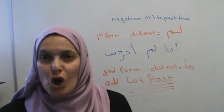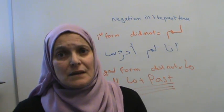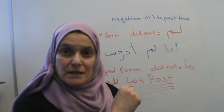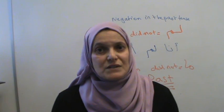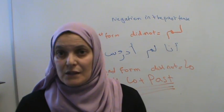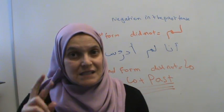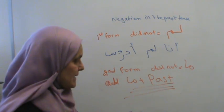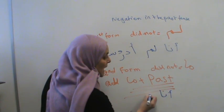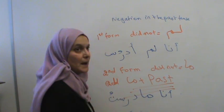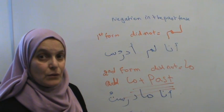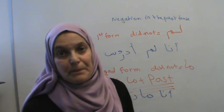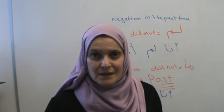The second form: 'did not' can also be expressed with 'ma' — add ma plus past tense. We have two ways: lem plus present tense, or ma plus past tense. 'Ma' does not affect your conjugation in the past tense. Refer to my video on past tense conjugation. I prefer the second form — for example: 'ana ma darrustu' means 'I did not study.'